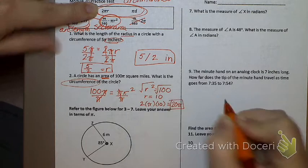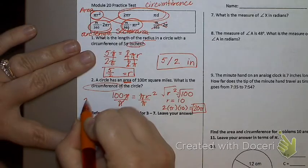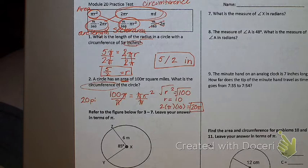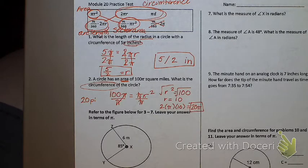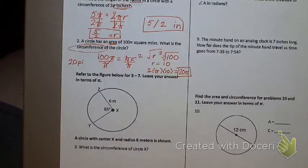Most of your tests — I think all of your tests except maybe one question — ask you to leave it in terms of pi. So how do you type 20 pi into the computer? You type 20 pi. Those instructions will be at the top of the test, so it'll say type in 'pi' for pi. Not P-I-E, but P-I.